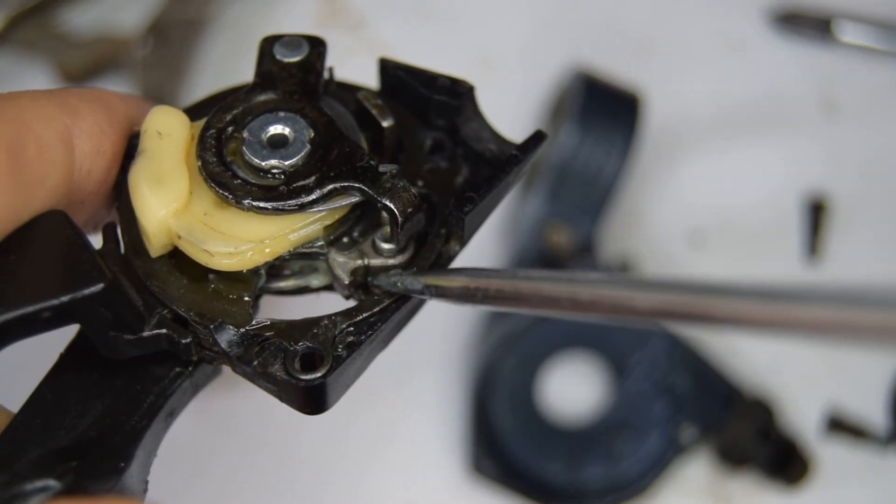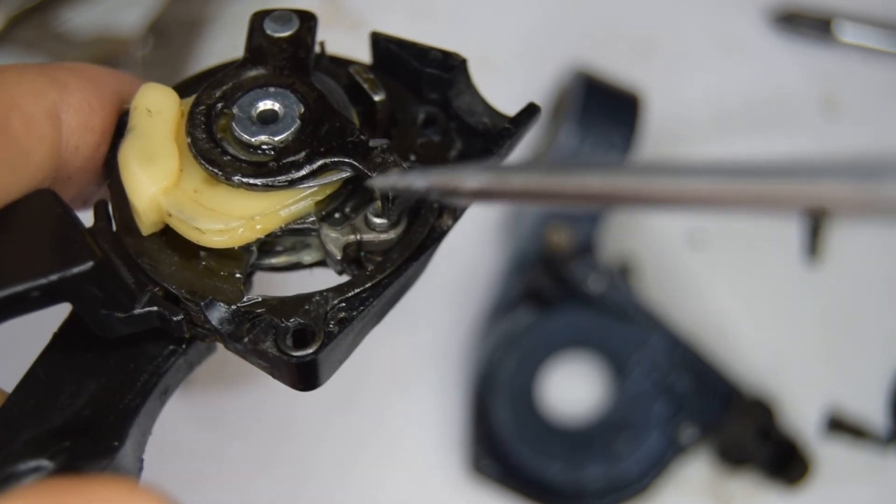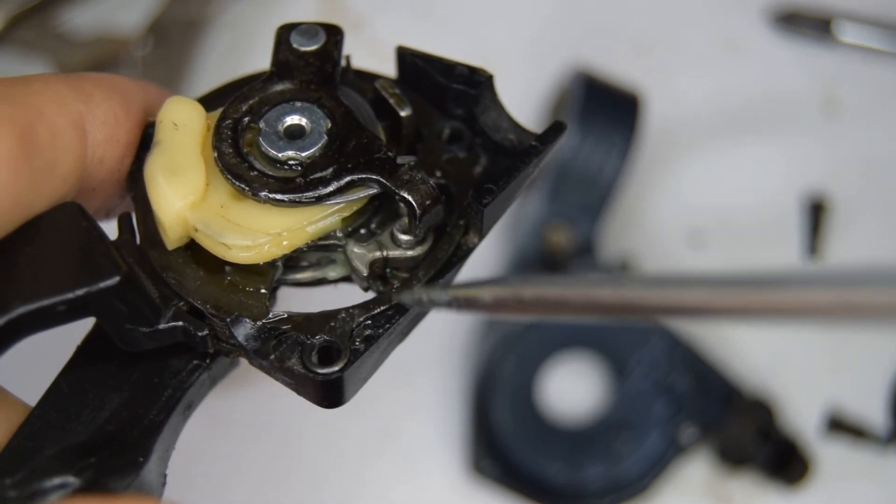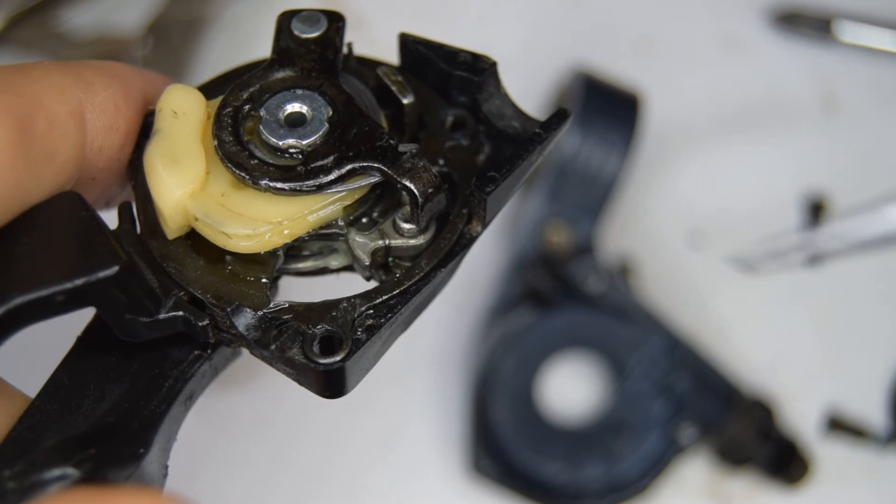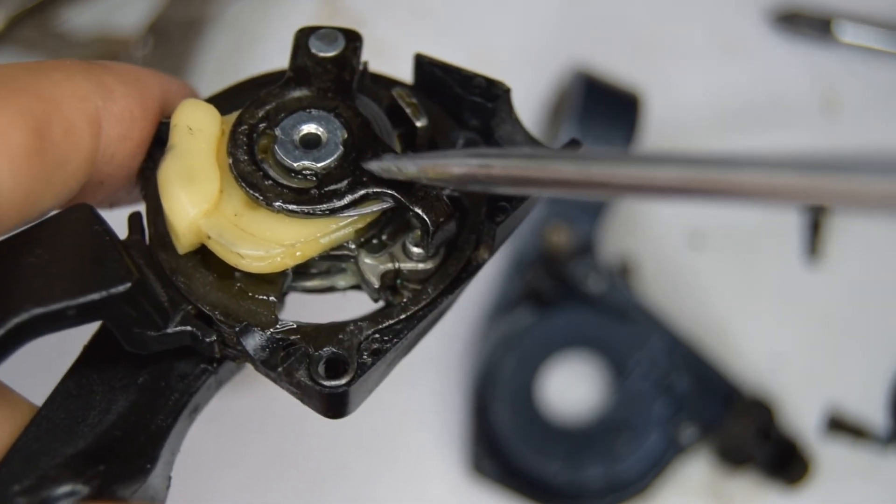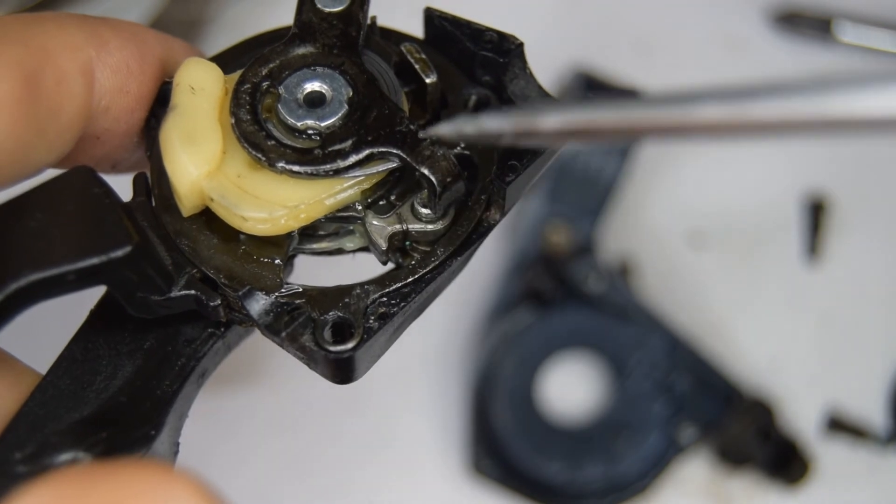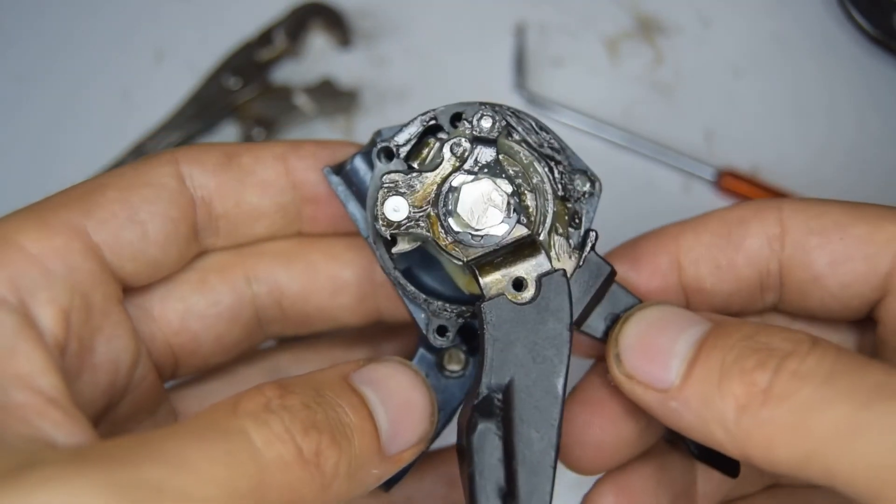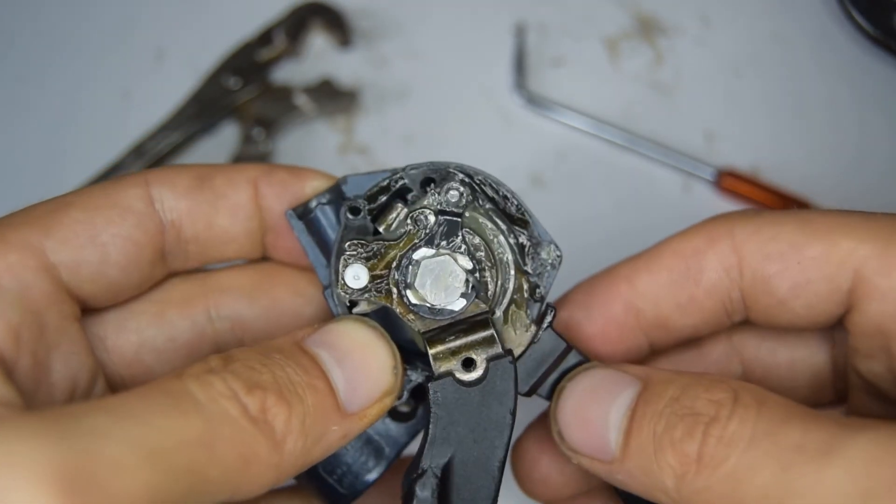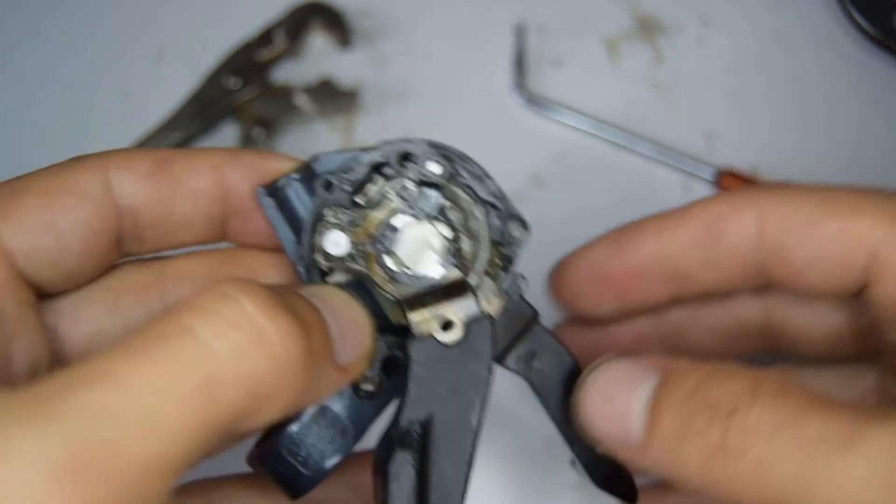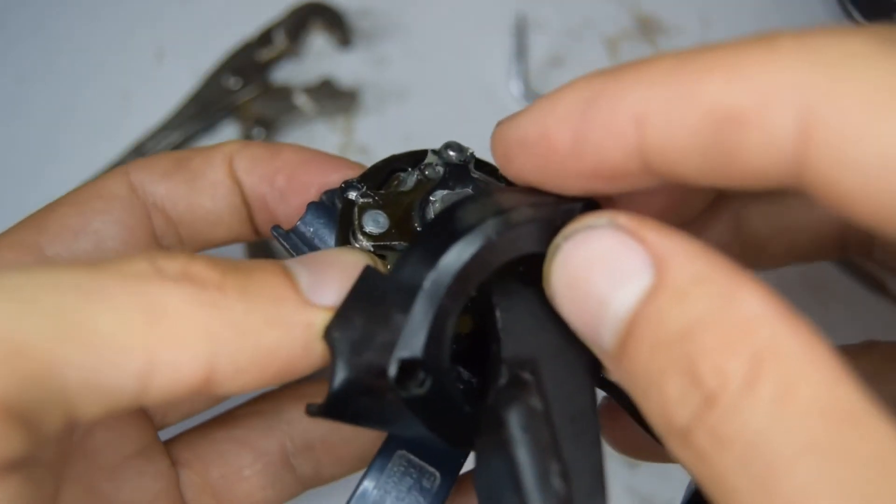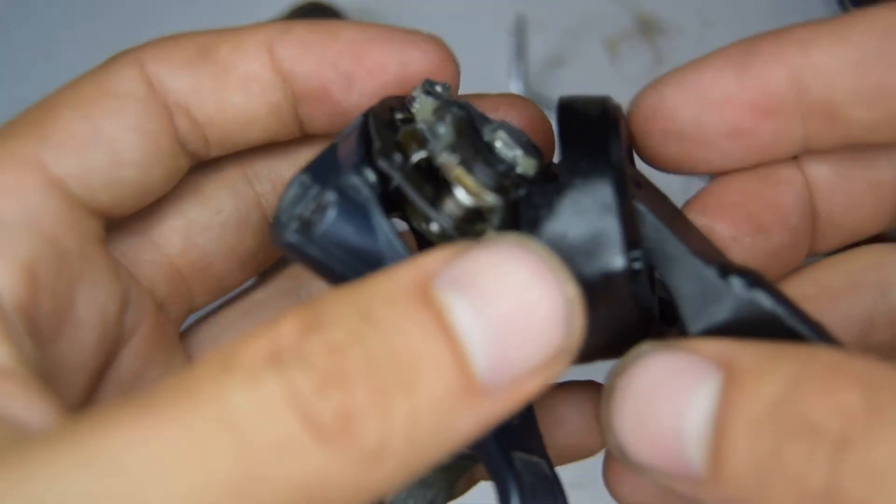This part here, the spring on that little pawl, slipped out and it meant that the shifter was not clicking into second gear. But thankfully I don't need to undo this. I can actually just slip it back on from the exterior. So now we're going to put the mech back onto the main body. So this part goes through here I believe. I think it might even need to go first.